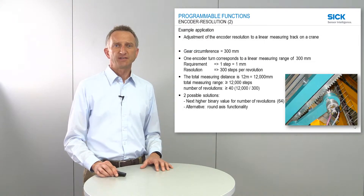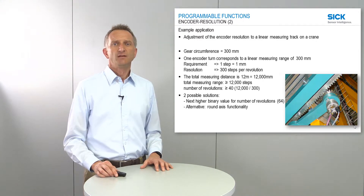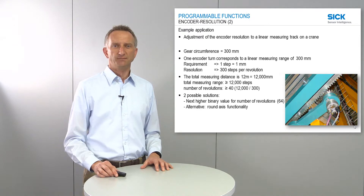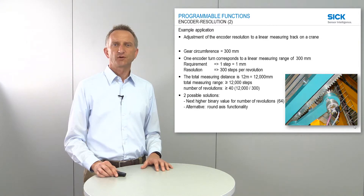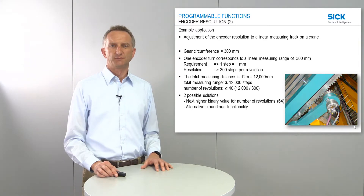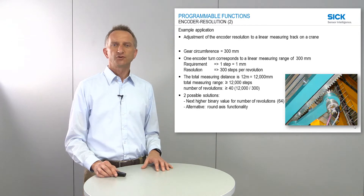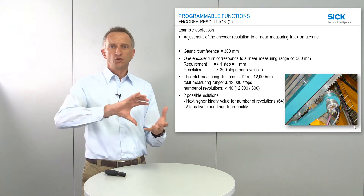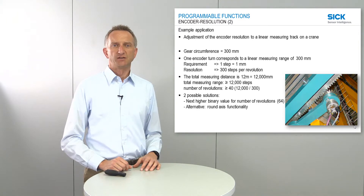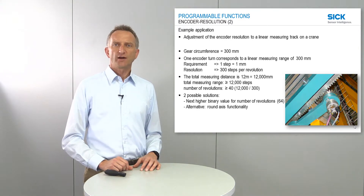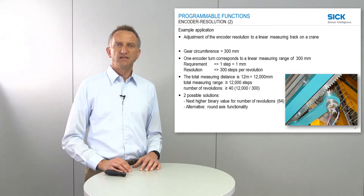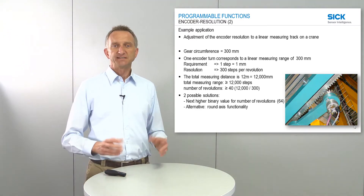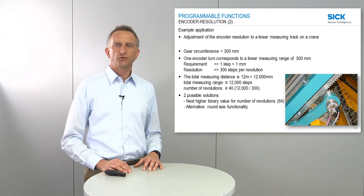Let's have a look at a first application example. Here we are looking at a linear measuring track on a crane. The encoder is assembled to a gear with a circumference of 300 mm, meaning one encoder turn corresponds to a linear measuring range of 300 mm. The requirement for this application is to have one step equaling 1 mm, which means we have 300 steps per revolution.